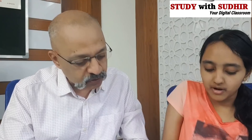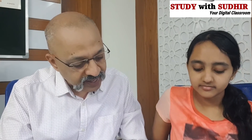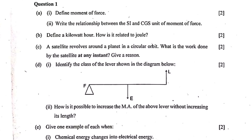Question 1a is for one mark. The second part: write the relationship between the SI and CGS unit of moment of force. The SI unit relationship is: one newton meter is equal to ten to the power of seven dyne centimeter. Or you could write one dyne centimeter equals ten to the power of minus seven newton meter. If written in words, ensure 'newton' has a lowercase 'n.'